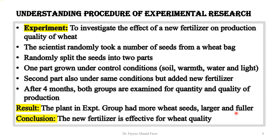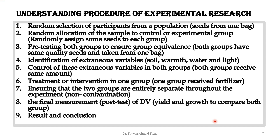The result is that the fertilizer is effective for producing good quality wheat. This is how we investigated the effect of the new fertilizer by providing a controlled environment and adding the fertilizer to one group. Now let us extend this procedure to all experimental research.